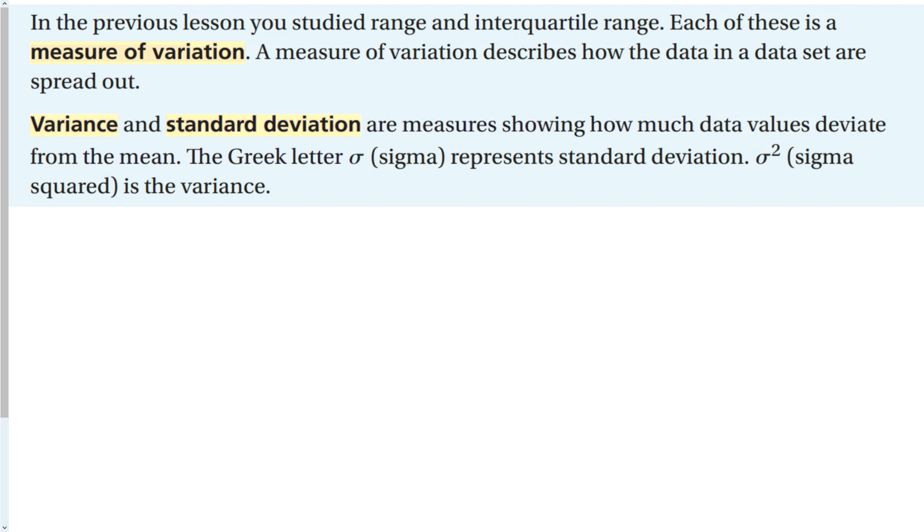Variance and standard deviation are measures showing how much data values deviate from the mean. We use the Greek letter sigma to represent standard deviation, and sigma squared is the variance.